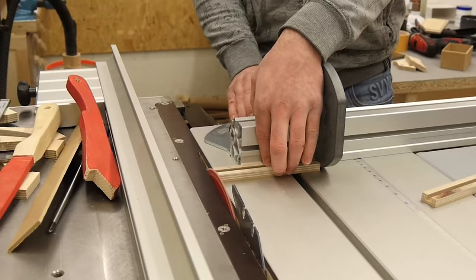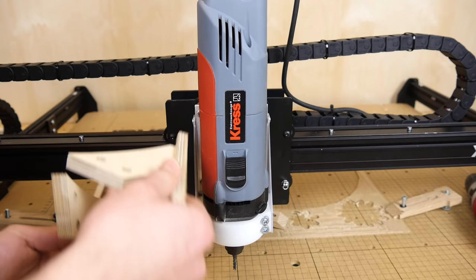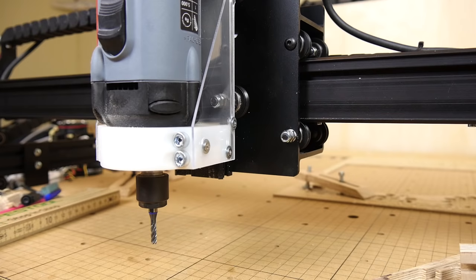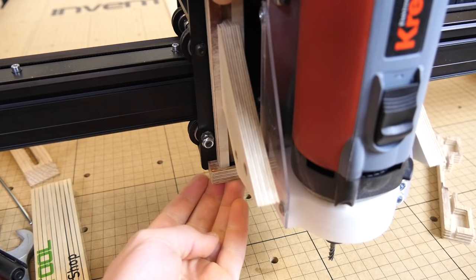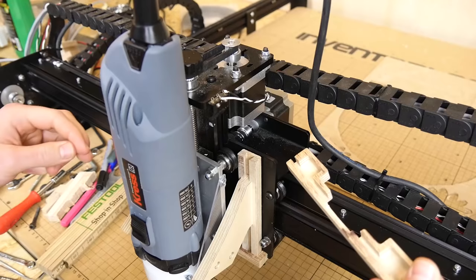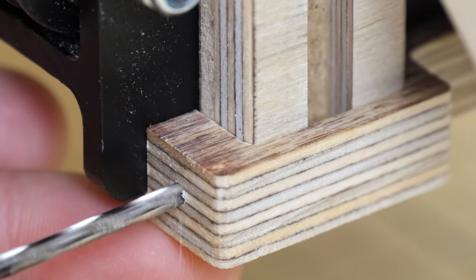Then the CNC cut out the pieces with which the tracks get mounted to the gantry. Quite complex shape but that's what the CNC is good at. And now with these pieces I can attach the sliders to the gantry, simply by sliding one of these on the bottom, then inserting the rails, then I can slide down the other piece on the top.